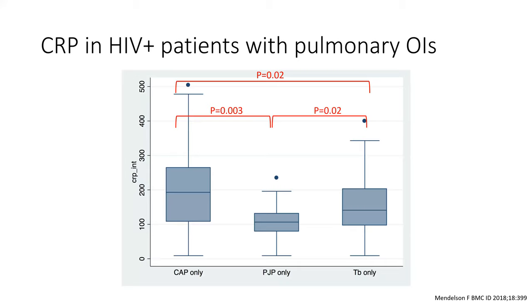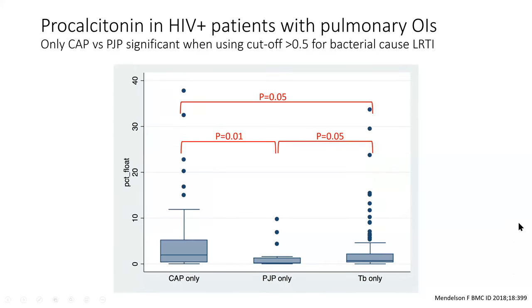Here are the results from our study, in which we excluded co-infections and looked only at single diagnoses of pneumonia, pneumocystis, or TB. Statistically significant results — yes, we reached p < 0.05. But we haven't really hit clinical significance. Pneumocystis CRP is lower than TB, which is lower in turn than bacterial pneumonia. The same pattern holds for procalcitonin: PJP lowest, pneumonia highest, TB in between. Nice p-values, but the overlap between groups is just too great.